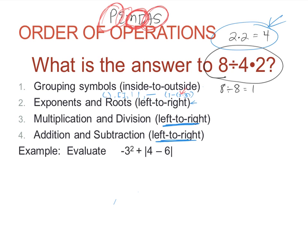Let's do this example problem. We have an exponent, addition, and subtraction within an absolute value. Grouping symbols come first, and the absolute value acts like a grouping symbol, so we do what's inside it first. Four minus six is negative two, so the expression inside the absolute value is negative two. Next, we take the absolute value of negative two, which is two.